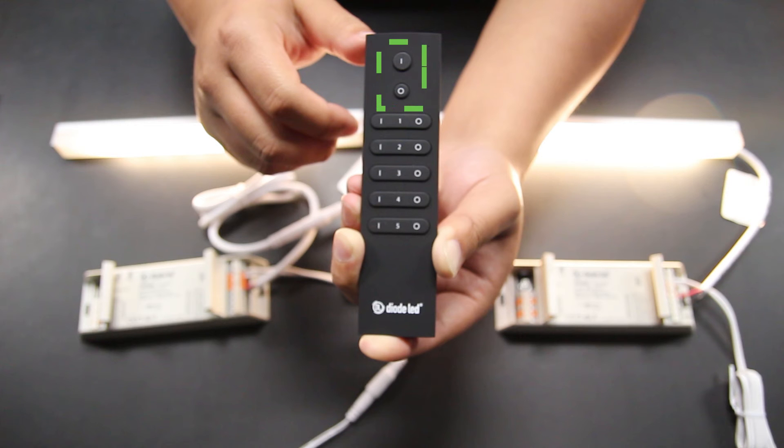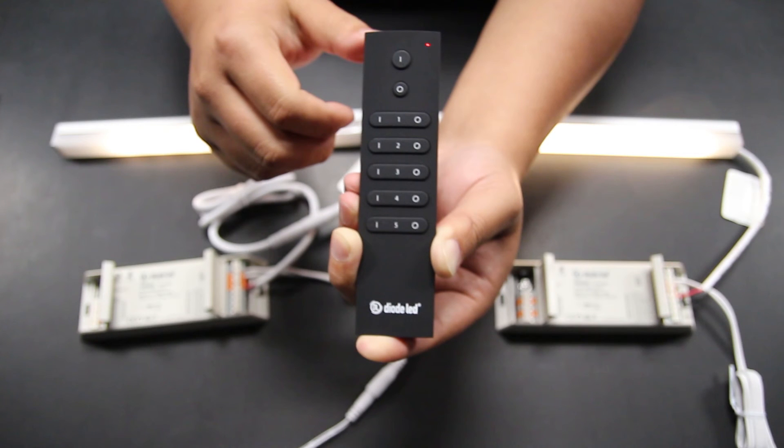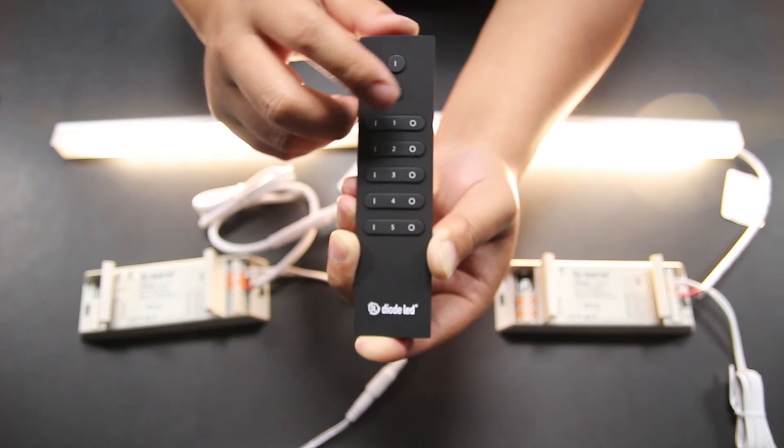The top two keys found on the remote operate all zone functions. Pressing and releasing the top key labeled I turns all zones on, while the O key just below turns the lighting off.